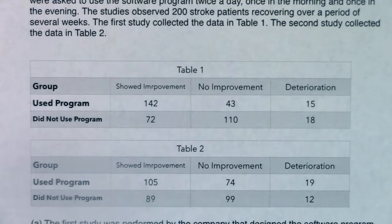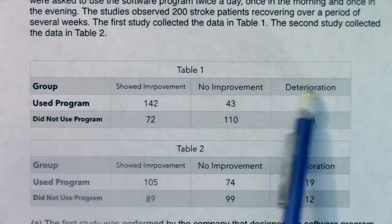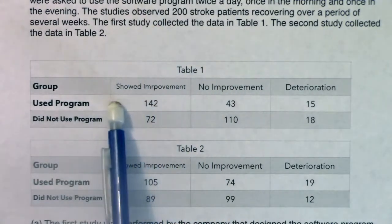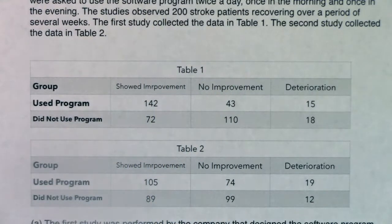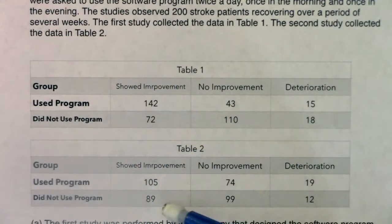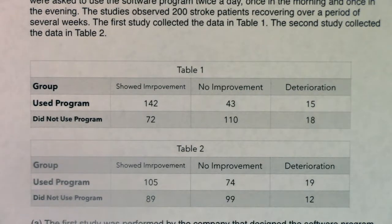Looking at both experiments: when we ran the experiment the first time it was looking really good. If I made that software program, I'd love experiment number one. And experiment number two still shows improvement stronger for those who used the program than those who didn't — experiment number one is just looking especially great.